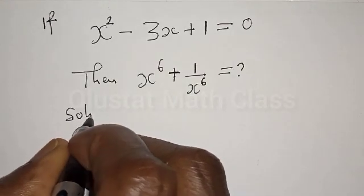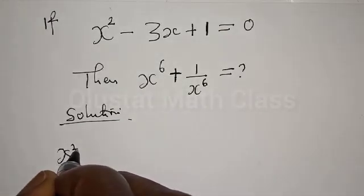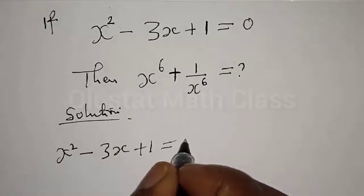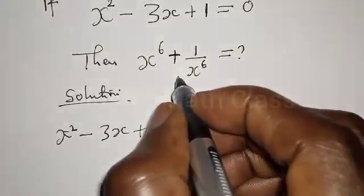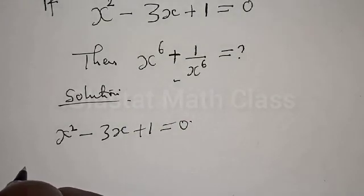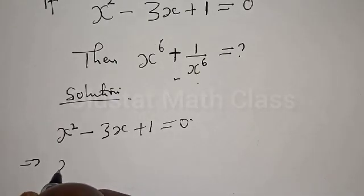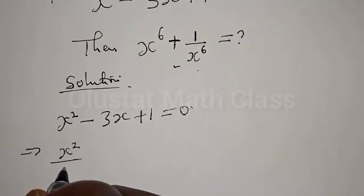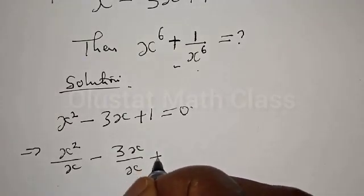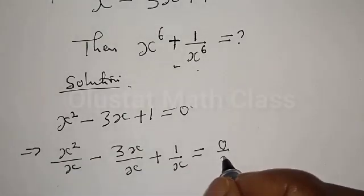Solution. We have x squared minus 3x plus 1 equal to 0. We want to find the value of x raised to power 6 plus 1 over x raised to power 6. To do this, let's divide all terms through by x: x squared over x minus 3x over x plus 1 over x equals 0 over x.